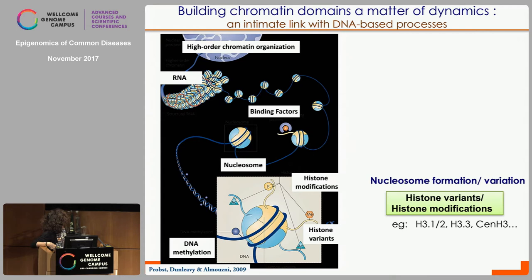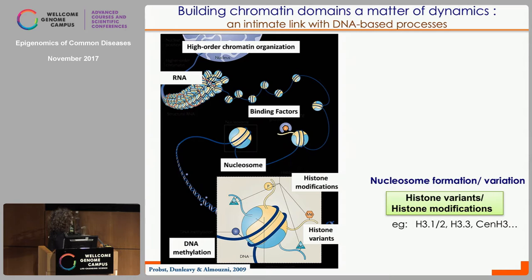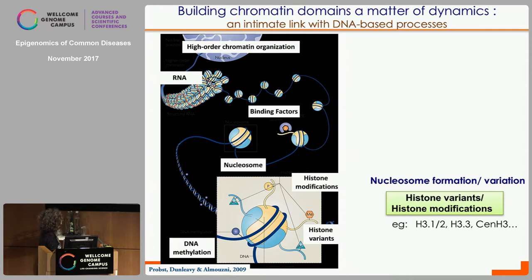What we have really considered is how building chromatin domains takes into account the dynamics going from the very basic unit, the nucleosome, up to higher order organization in the nucleus, and how this is really intimately linked with DNA-based processes such as transcription, repair, recombination, and replication. All these events can potentially impinge on the organization, but the organization itself can also impinge on these phenomena. The diversity is brought by the choice of modification at the DNA level, the choice of histone variant composing the particle, and the range of modifications that can be imposed on the tails or other parts of the histones.